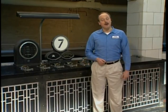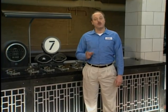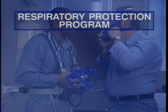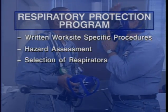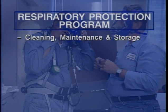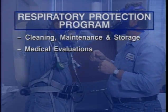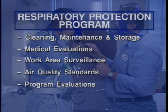It's a lot to remember, but don't worry. All of the information covered in this video is part of a utilities respirator program. Your employer is required to implement and maintain a written respiratory protection program to help you understand how you can work safely. The program includes written worksite-specific procedures, hazard assessment, selection of respirators, fit testing, training, inspection, cleaning, maintenance, and storage, medical evaluations, work area surveillance, air quality standards, and program evaluations.